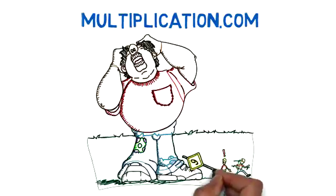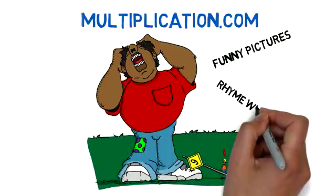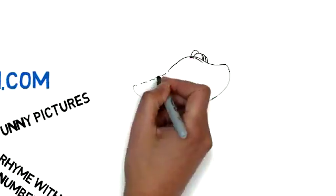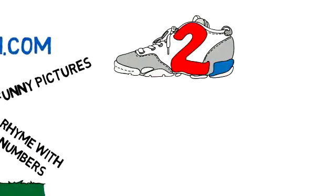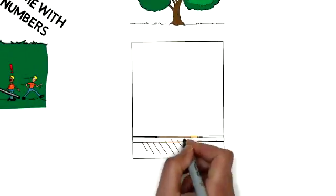Since pictures are easier to remember than numbers, in our system we use funny pictures that rhyme with numbers. For instance, we use shoe for two, tree for three, door for four. You get the picture.